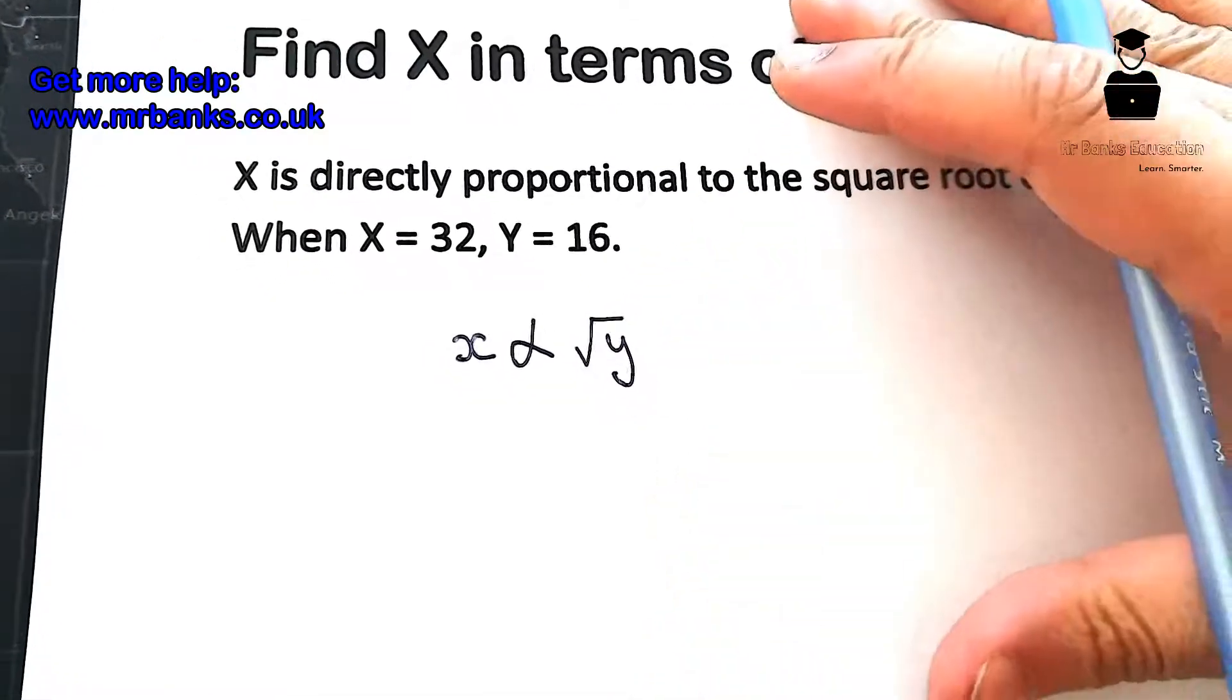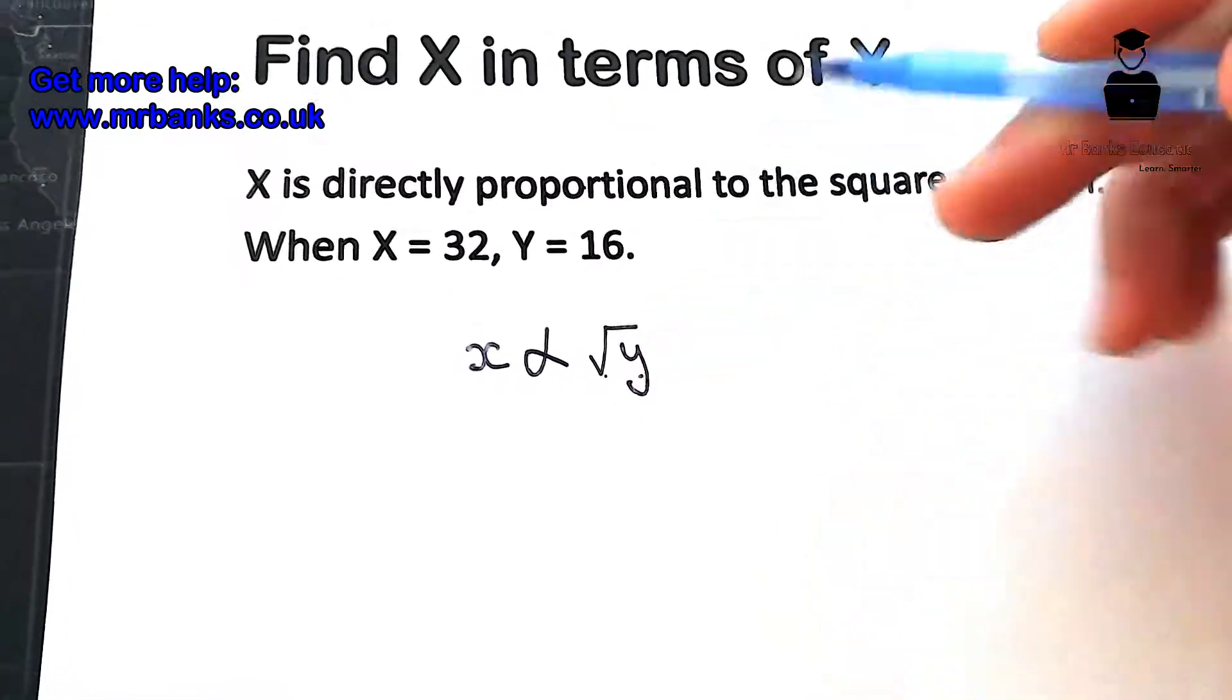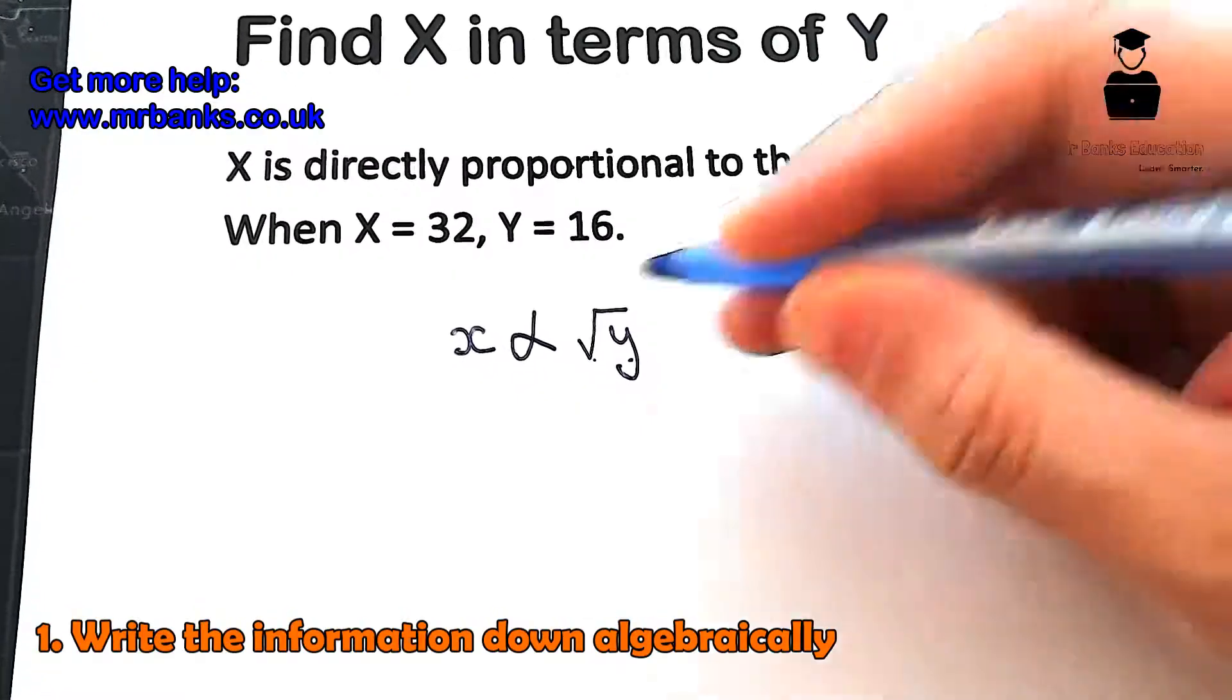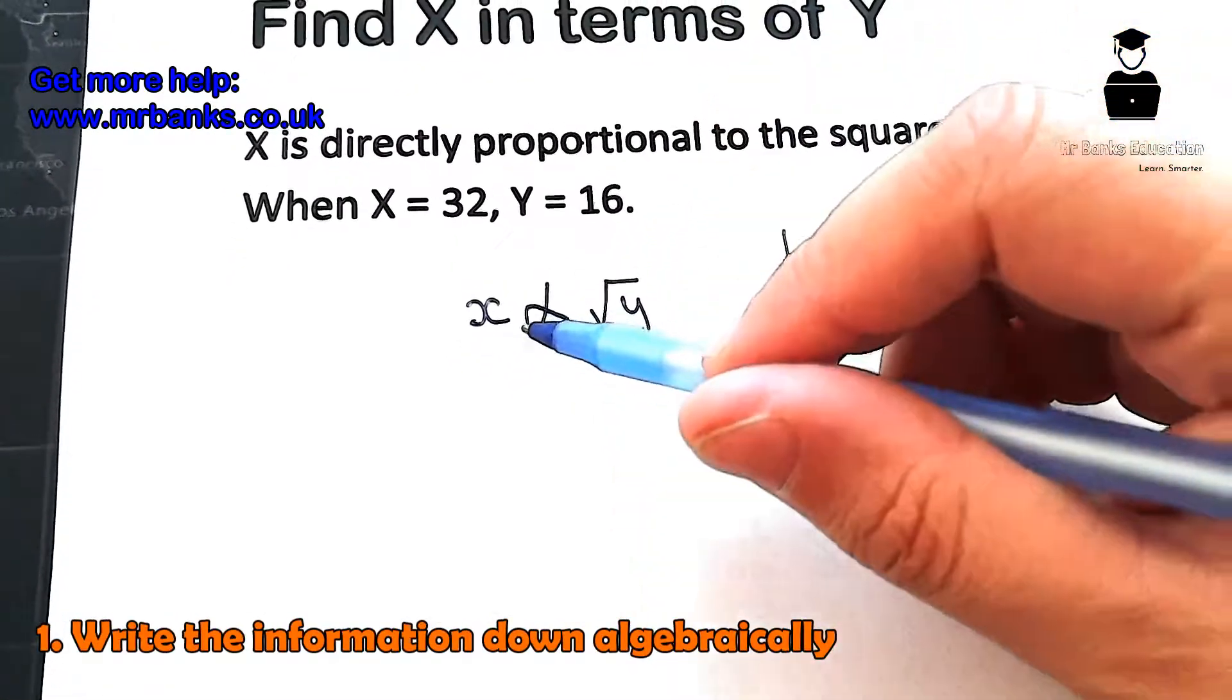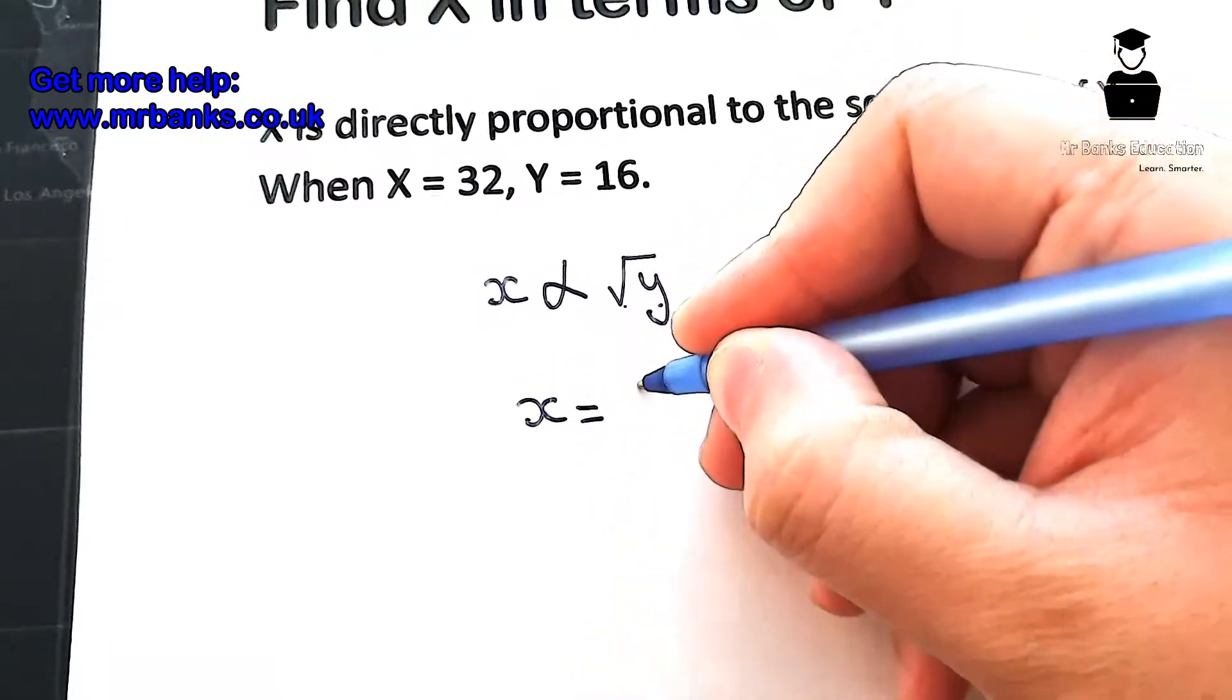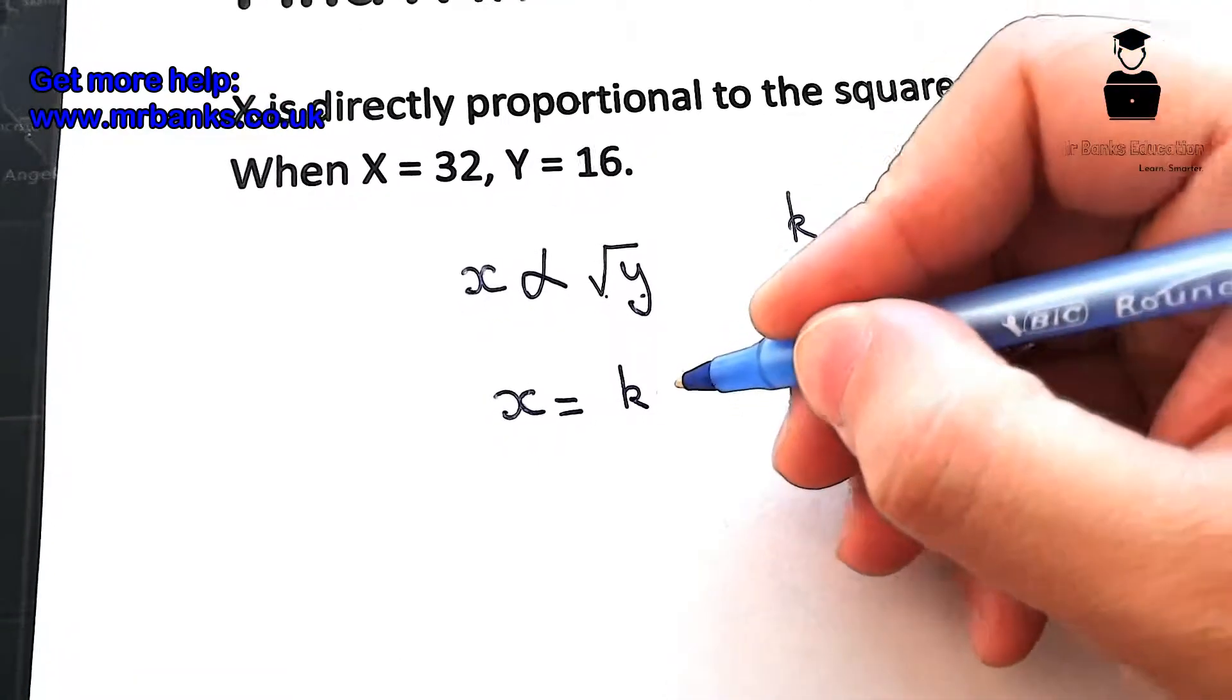Now what this means is that the root Y times a constant, which we can call k, is going to equal X. So we rewrite this like this: X equals k, which is a constant, times root Y.